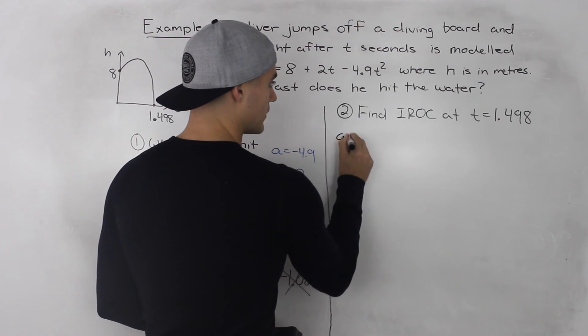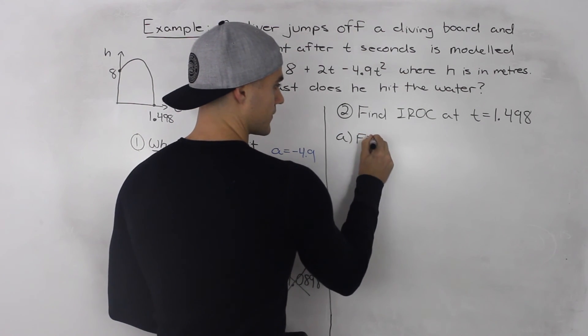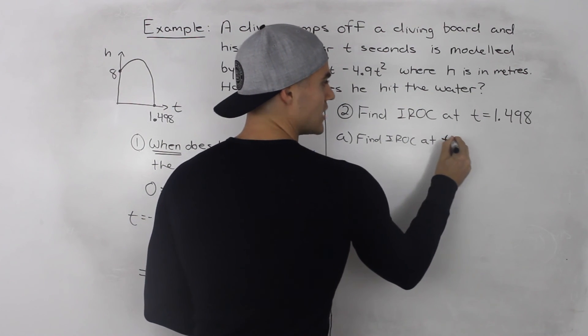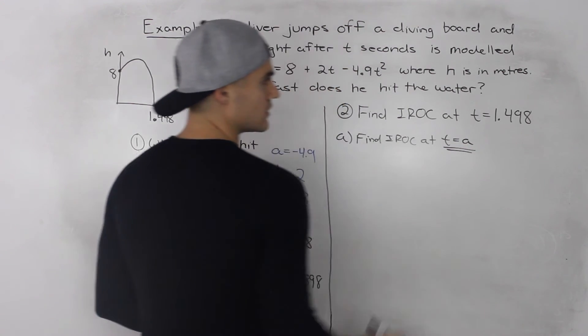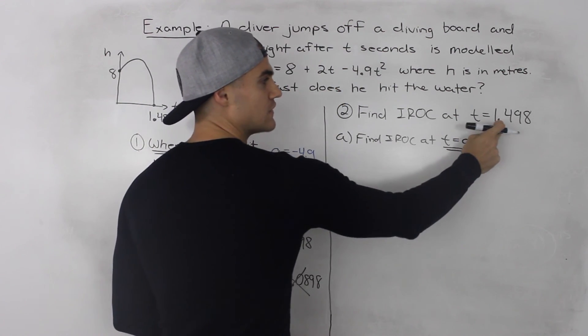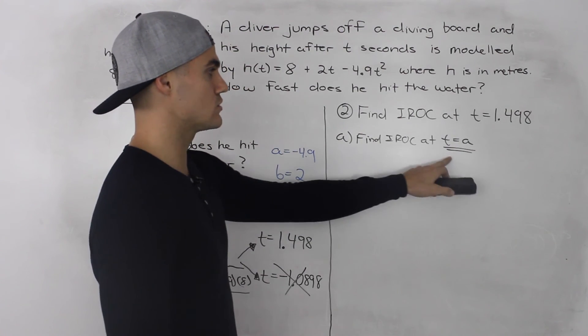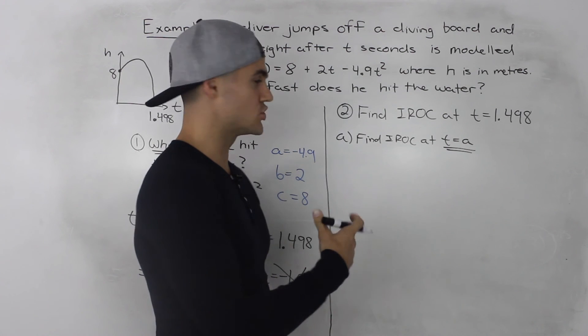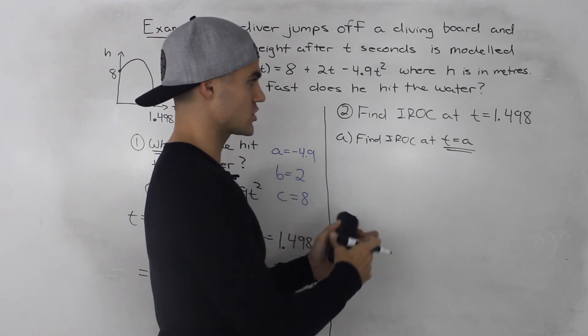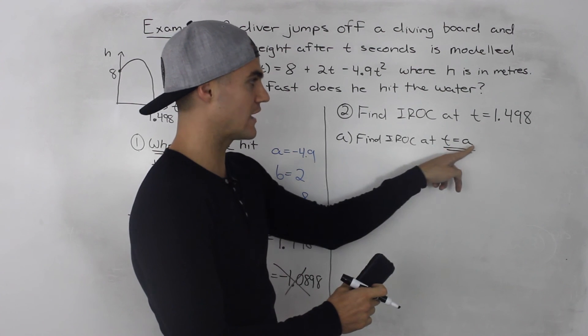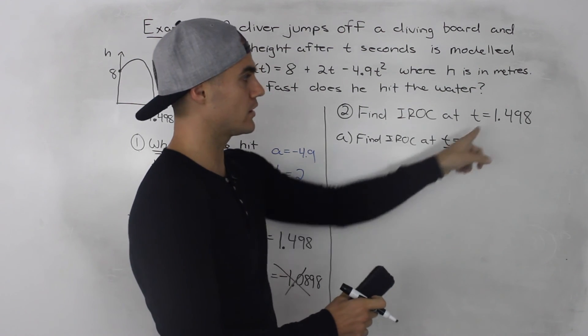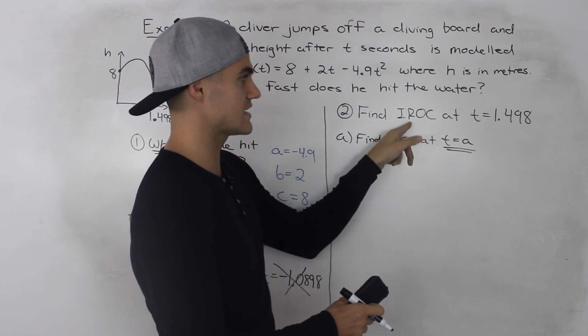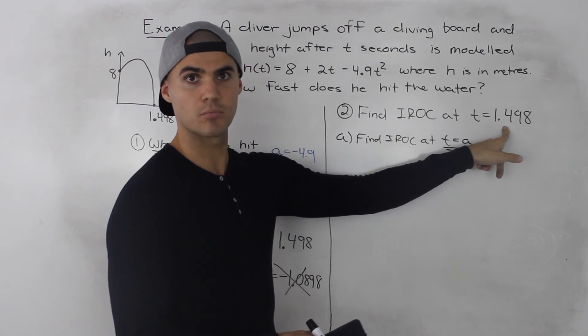And the way I'm going to start that off is I'm going to first find what the instantaneous rate of change is at a general t value a. So I'm not going to use our specific t value 1.498 yet. I'm going to use a general value a first. And then once we have our general expression for the instantaneous rate of change at a t value of a, we can then plug in 1.498 for the a value. And that would give us the instantaneous rate of change at that specific point in time.